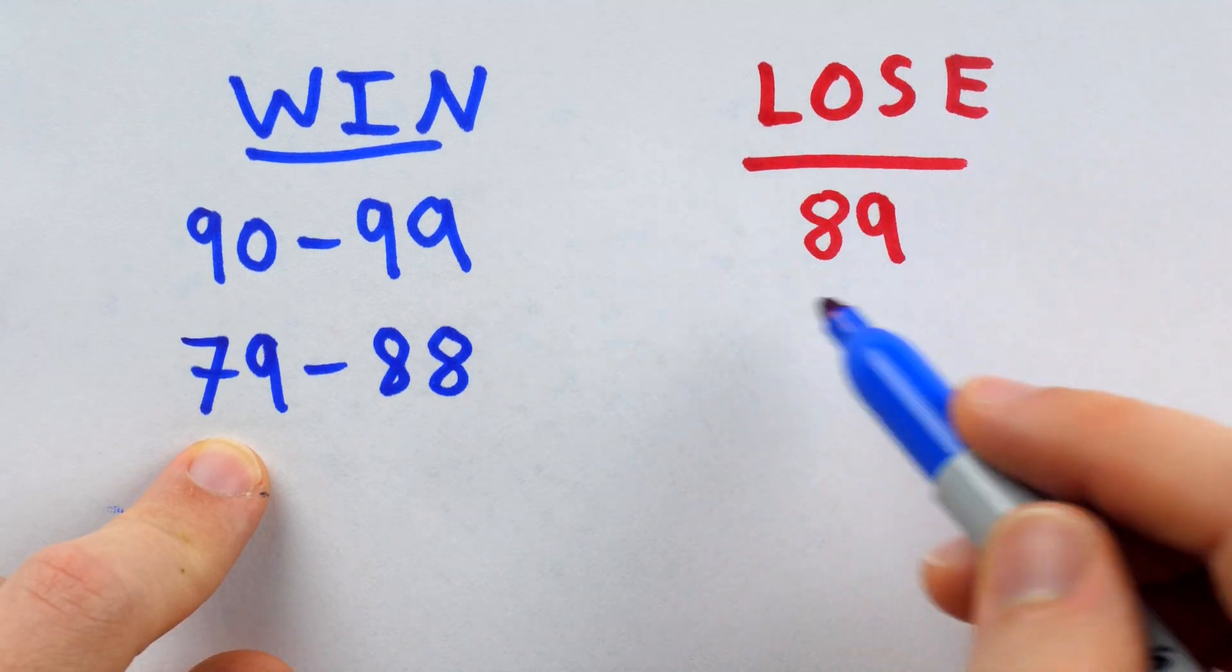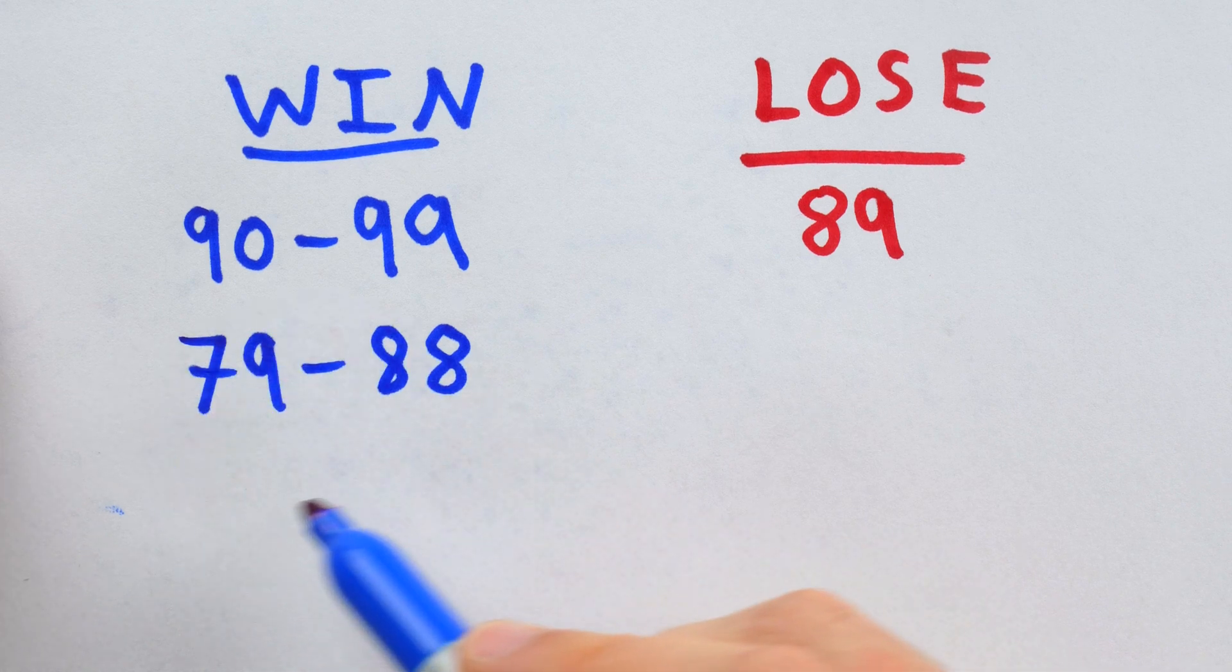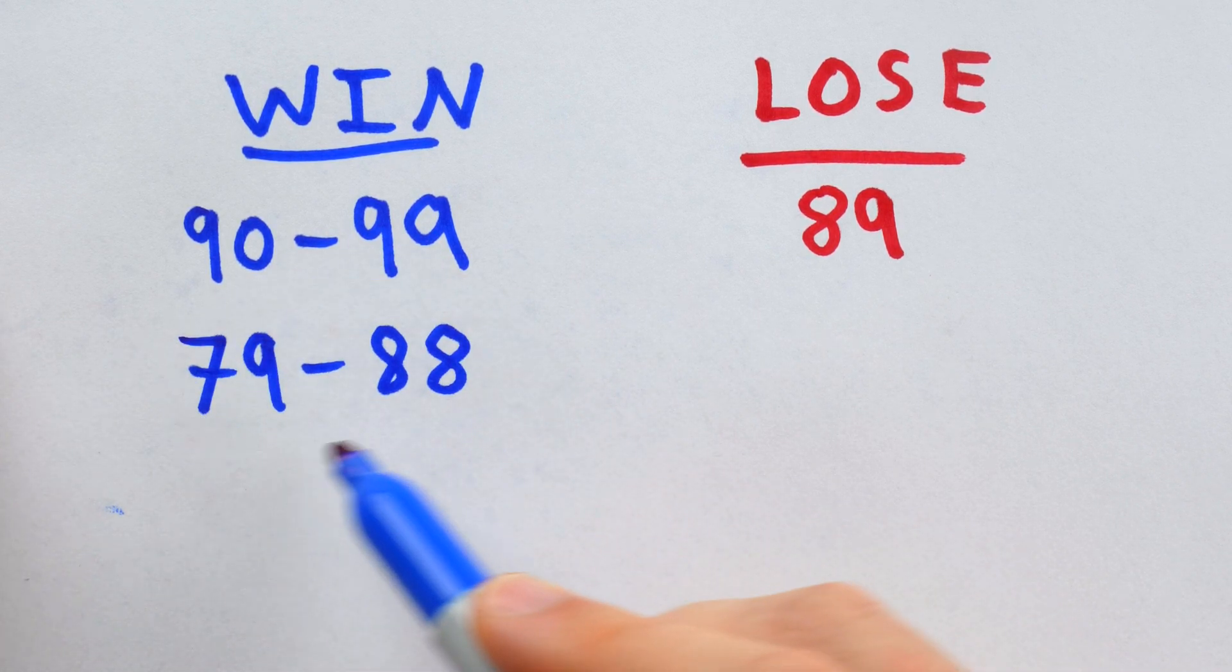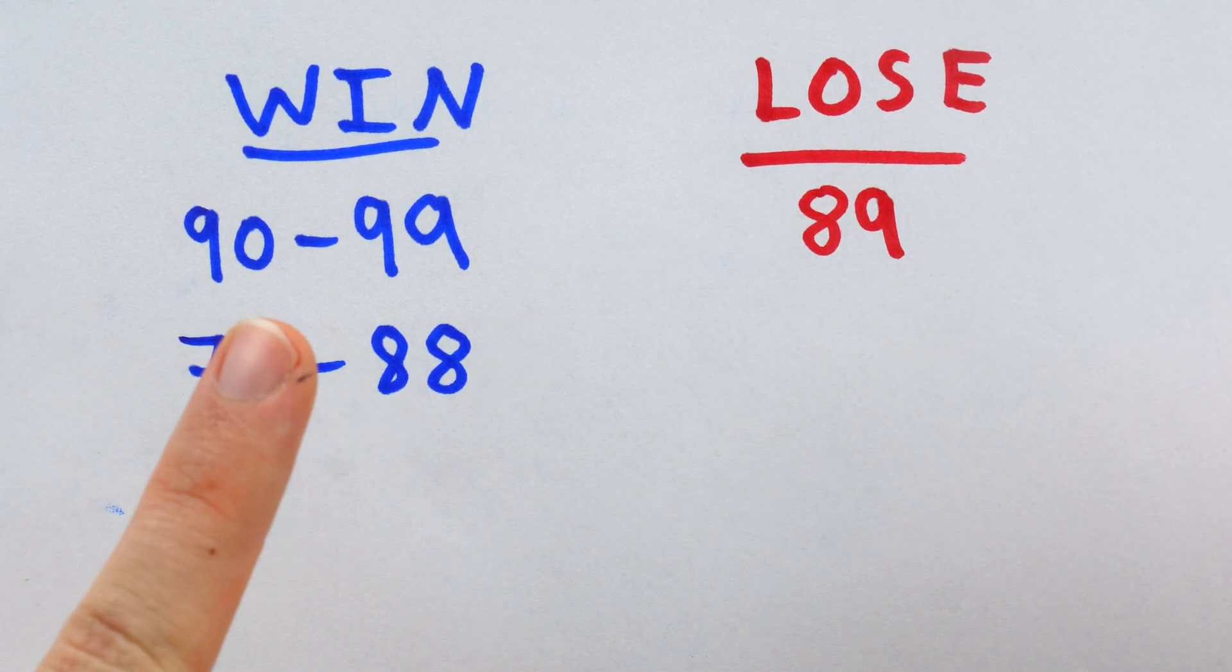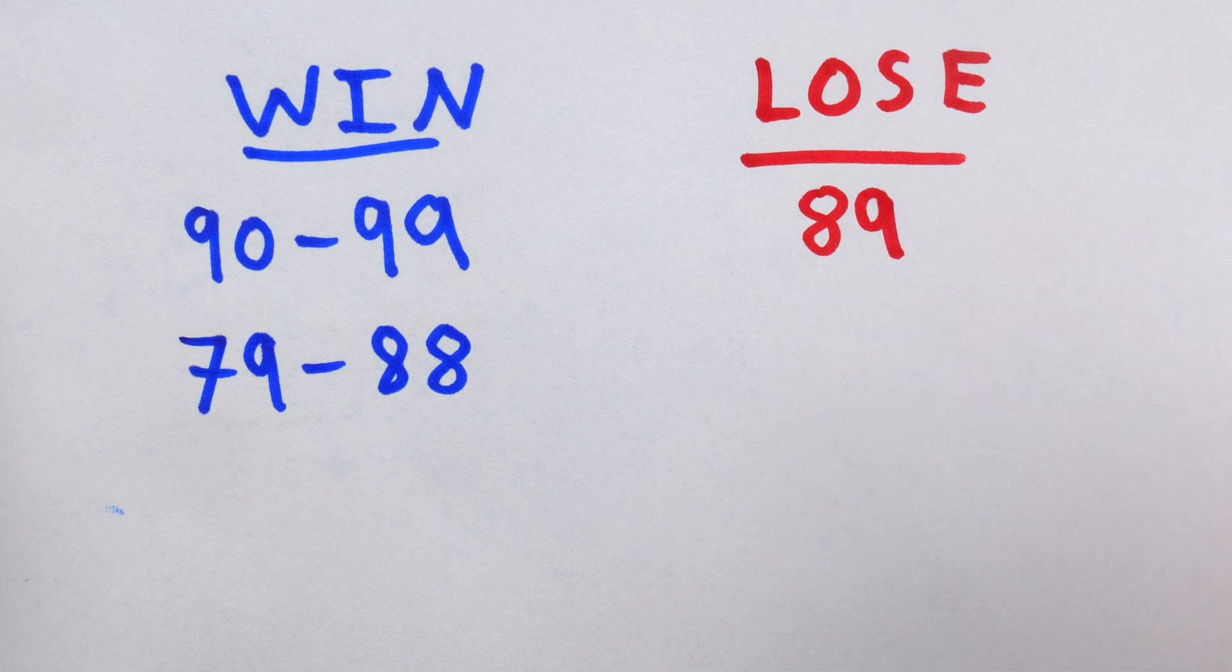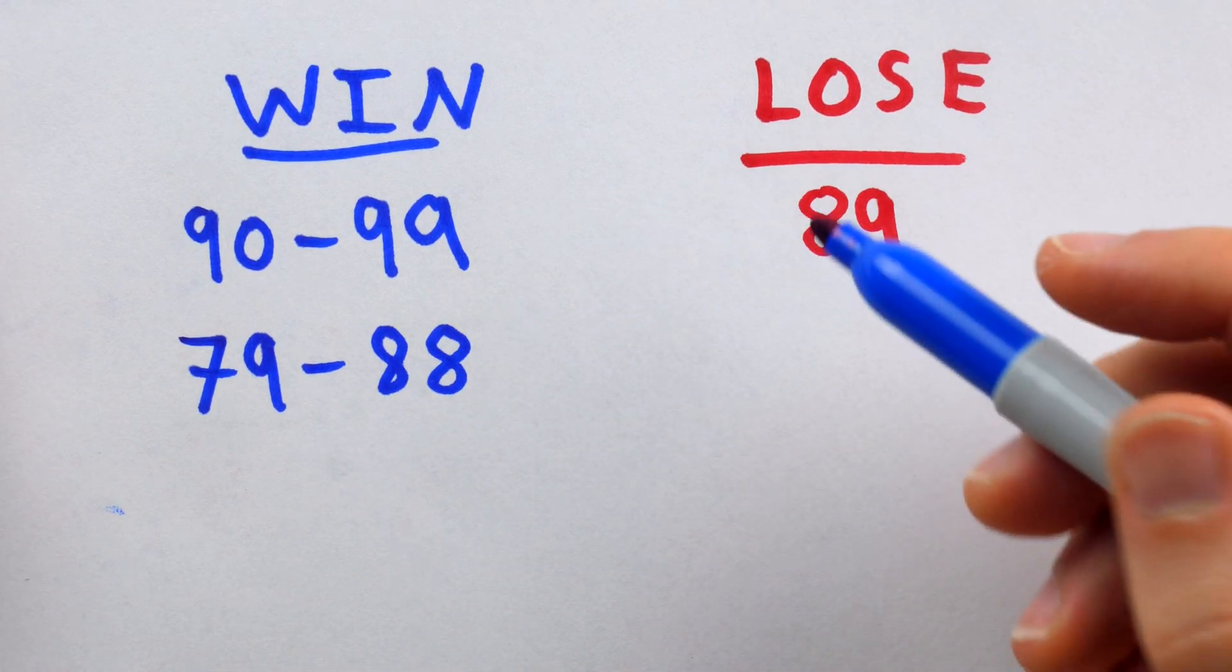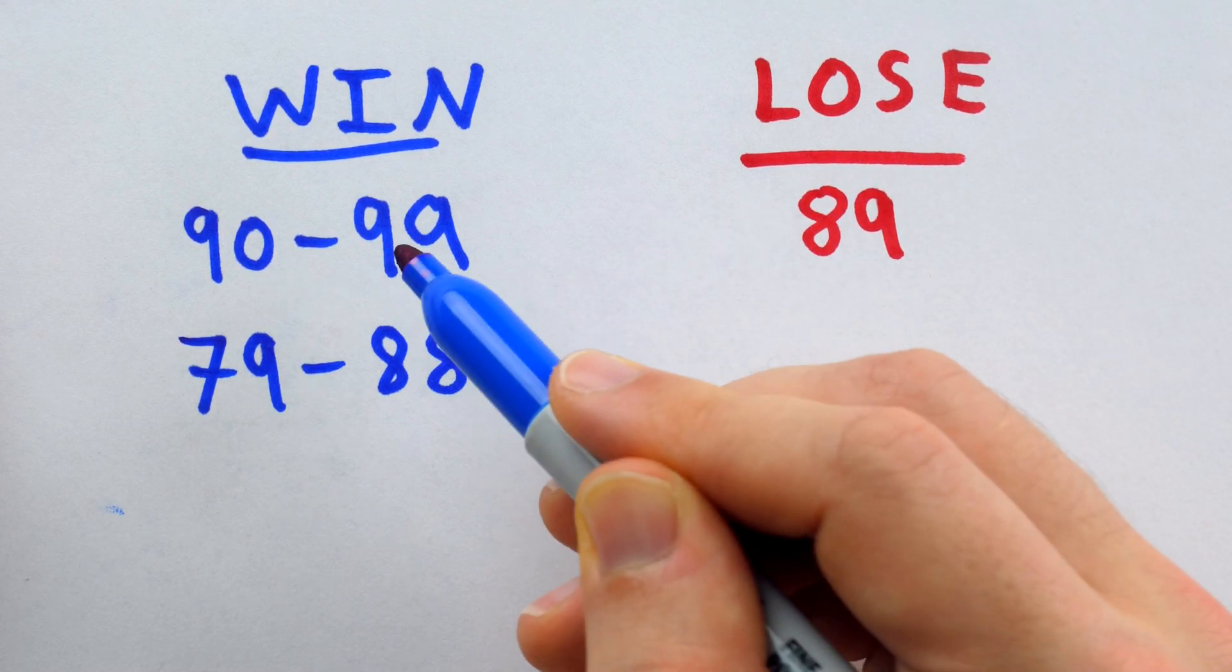Now, from the fact that 89 is a losing position, we can conclude that everything from 79 to 88 is a winning position, because if it's your turn and this is the subtotal, something from 79 to 88, you can add whatever is necessary, something between 1 and 10, to get the position to 89, where it will then be the other player's turn and they're guaranteed to lose by putting you back in this winning position.